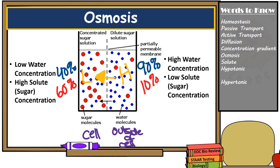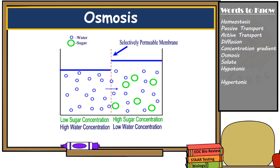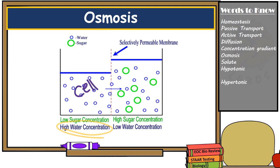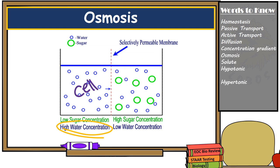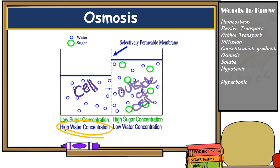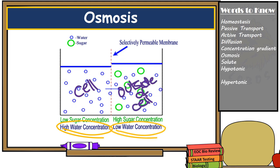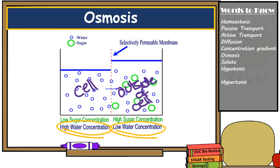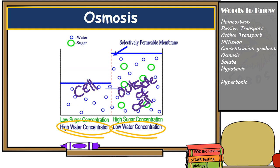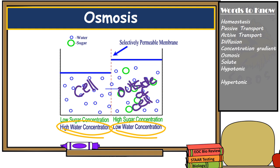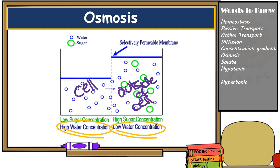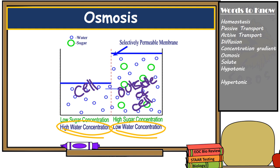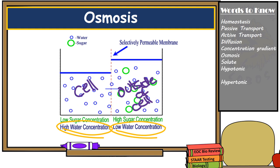Looking at the previous example again: the cell on the left has high water concentration, and the outside of the cell on the right has low water concentration. As for the sugar solute concentration, it's the opposite — the cell has low sugar concentration and the outside of the cell has high sugar concentration. This determines the type of solution outside the cell and how osmosis will occur.